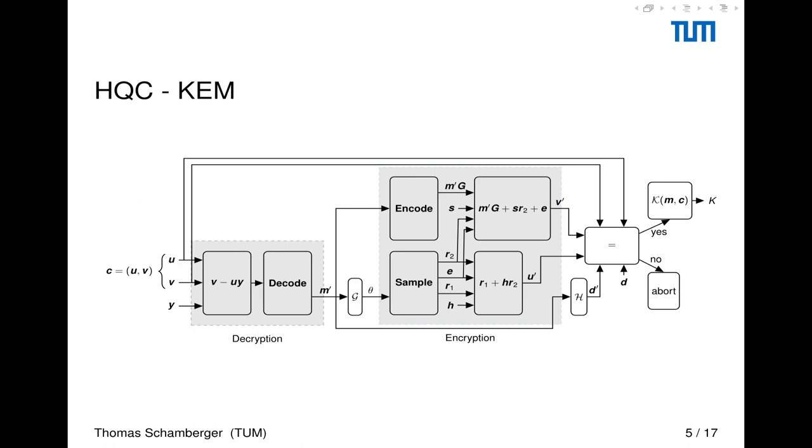How does this look like for the HQC-KEM? In the first part you can see the decryption, and in the second part you can see the encryption here. For decryption, you enter your ciphertext, decode to your message M, and this M then gets re-encoded. In order to have a deterministic re-encryption, we need to have the same seed for the sampler here to generate the same random polynomials. This is done by receiving the seed from this hash function G directly from our decrypted message. Here in the end, we can compare, and then we release our shared secret, or we abort the decapsulation.